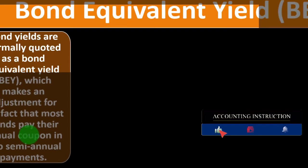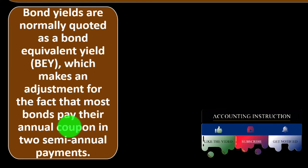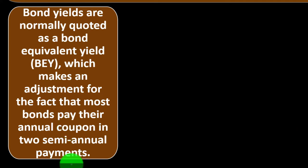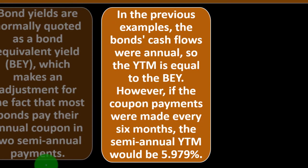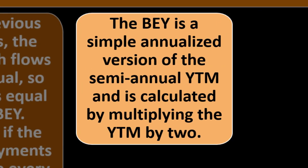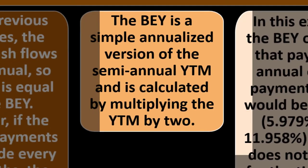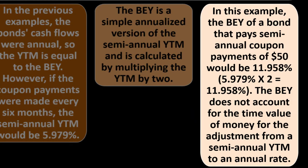Bond Equivalent Yield (BEY): bond yields are normally quoted as a BEY, which adjusts for the fact that most bonds pay their annual coupon in two semi-annual payments. In the previous example with annual cash flows, the YTM equals the BEY. However, if coupon payments were made every six months, the semi-annual YTM would be 5.979%, and the BEY — a simple annualized version — is calculated by multiplying the YTM by two, giving 11.958%.